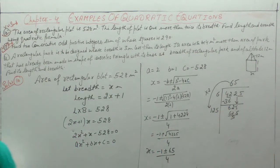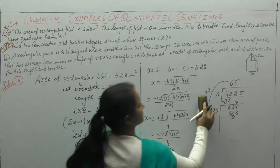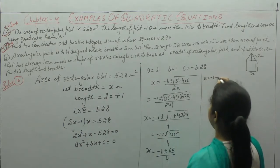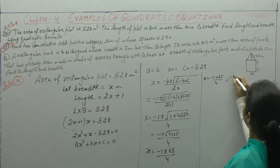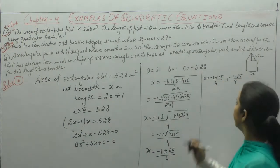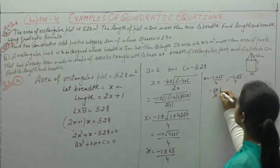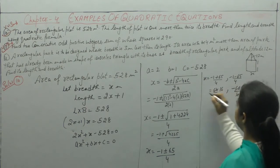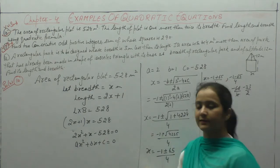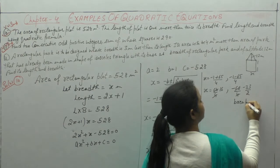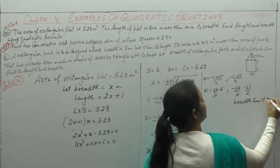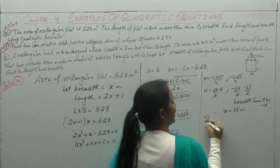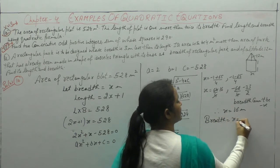In the next step, x will have two values: (−1 + 65)/4 = 64/4 = 16, and (−1 − 65)/4 = −66/4 = −33/2. Now, x was breadth. Breadth cannot be negative. Therefore, x = 16 meters, so breadth = 16 meters.